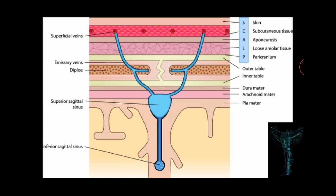The emissary veins connect the scalp veins to the intracranial venous sinuses. The fifth and last layer is the periosteum or pericranium — the outer layer of the skull bone — which becomes continuous with the endosteum at the suture line. Going deeper beneath these layers, we find the cranium with its outer and inner tables, then the meninges: dura mater, arachnoid mater, and pia mater. The space between the arachnoid and pia mater is the subarachnoid space, where cerebrospinal fluid (CSF) is present, and beneath this begins the cerebrum.